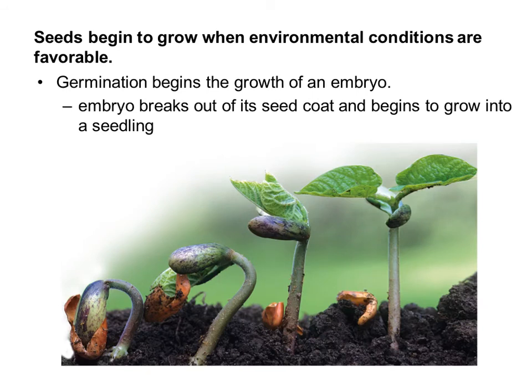Seeds can also be dispersed by water if they float, like a coconut. Seeds can stay dormant for a long time, but if environmental conditions are favorable, they will start to grow. The main thing that causes a seed to start growing is moisture — if a seed gets wet, it can start breaking down the seed coat, which causes it to grow. Germination is the term for the beginning of growth of an embryo.